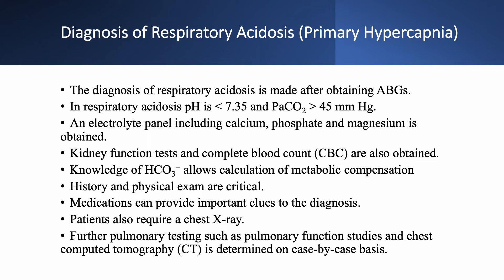How do we make the diagnosis? Arterial blood gases are needed — a low pH (less than 7.35) and PaCO2 over 45. An electrolyte panel is needed including calcium, phosphate, and magnesium, along with kidney function tests and a CBC. Serum bicarbonate is needed to calculate metabolic compensation. History and physical will often reveal the diagnosis — asthma, COPD, CHF, medications. All patients need a chest X-ray. Further tests such as CT scan or pulmonary function studies depend on the etiology.